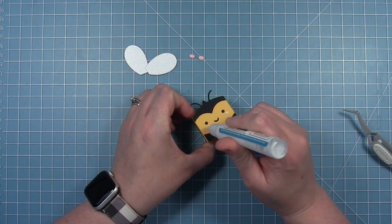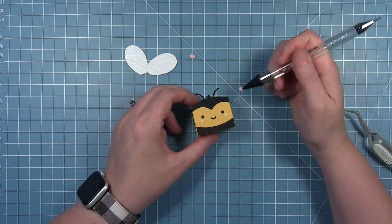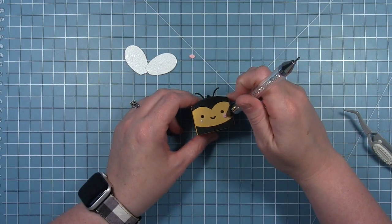I did forget to add his cute little rosy cheeks so I'm just going to add those quickly. Those are cut from some ballet slipper cardstock.